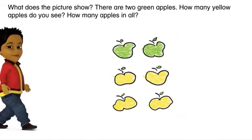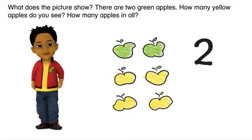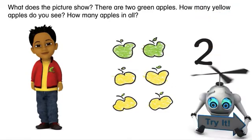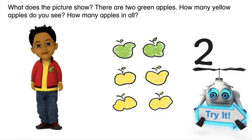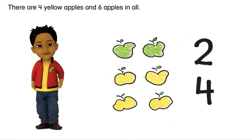What does the picture show? There are two green apples. How many yellow apples do you see? How many apples in all? There are four yellow apples and six apples in all.